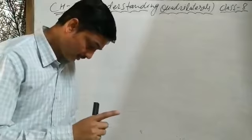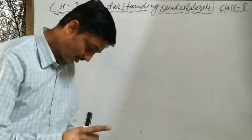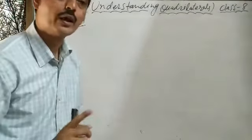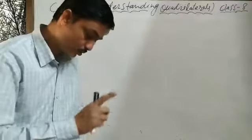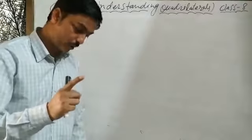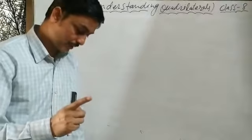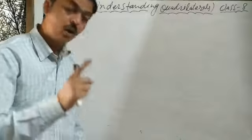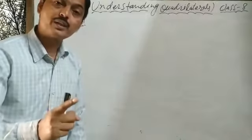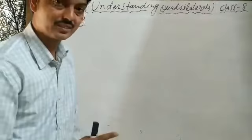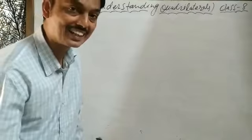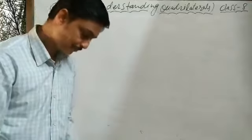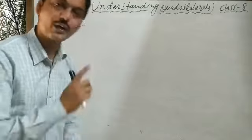All squares are rectangles. All the properties of rhombus and rectangles exist in a square.